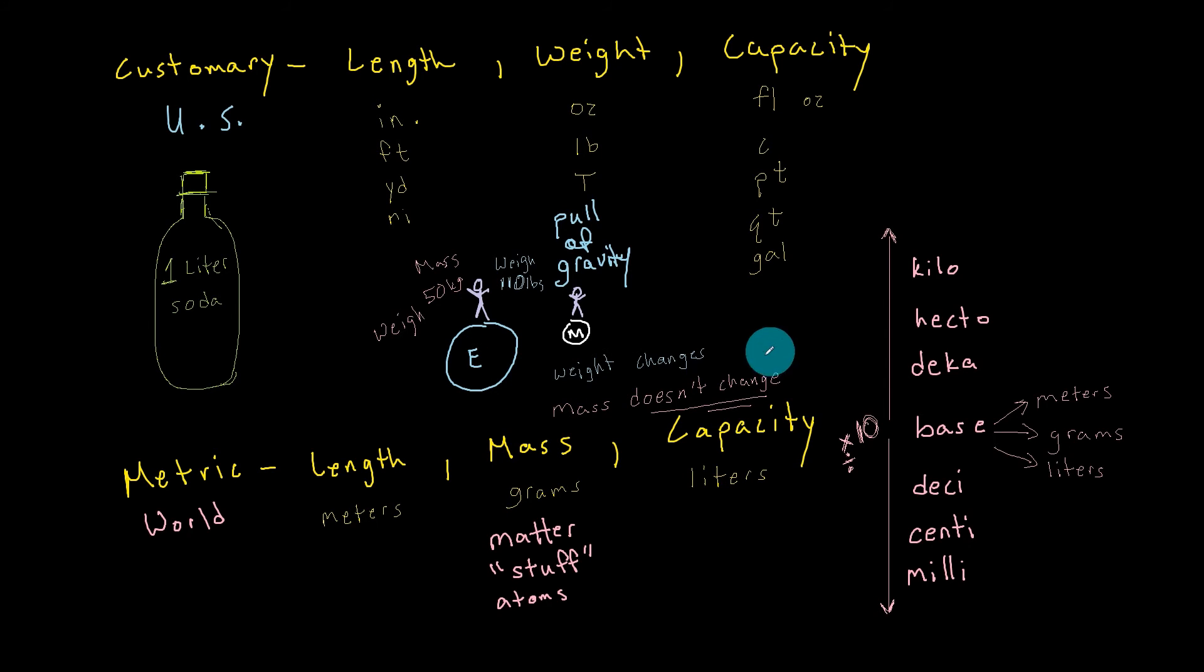If that person's mass is 50 kilograms, it's absolute. It doesn't change if you're on earth or on the moon. Let's write that word absolute, and I'm just going to box it up. The mass would not change.